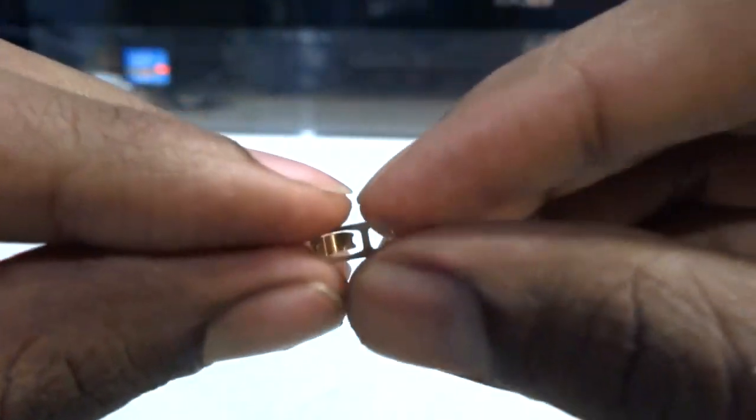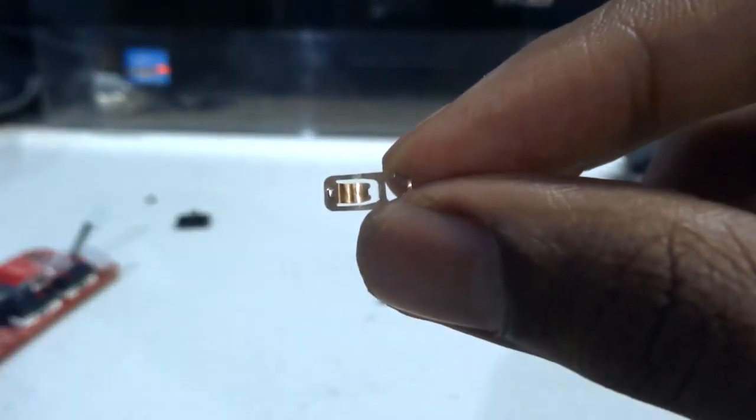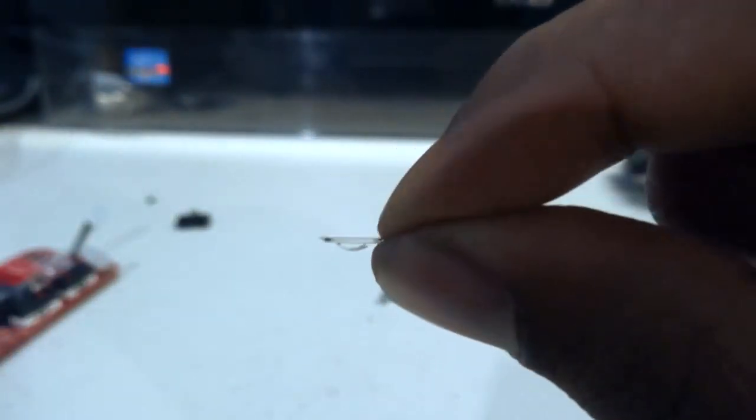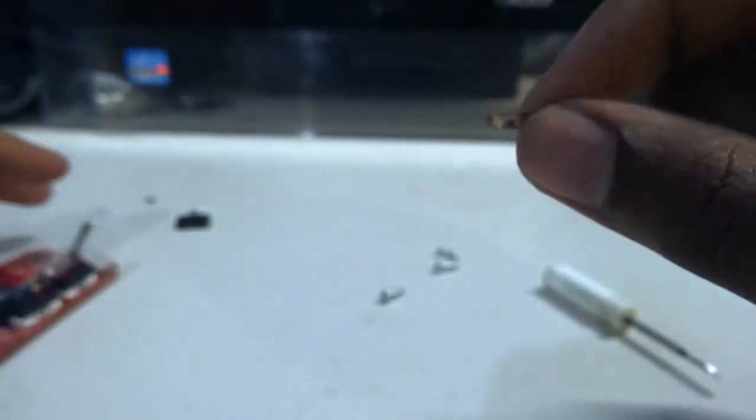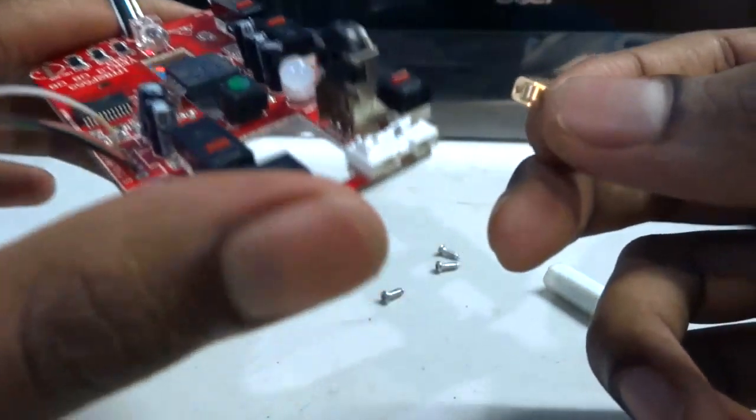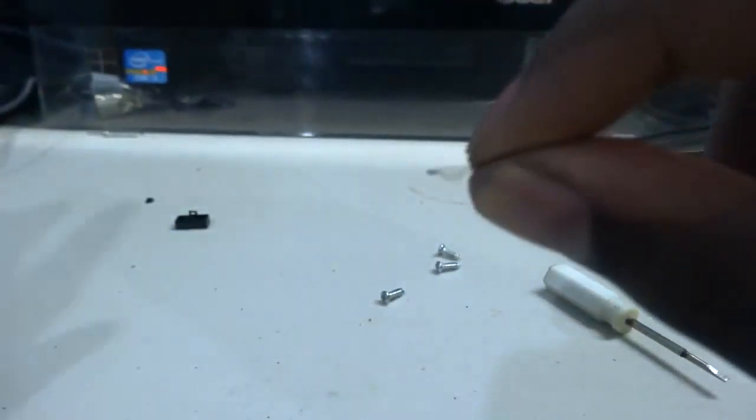Once it comes out, you have this, that's what it looks like. And you want to straighten that curved bit. Now of course, different mice have different mechanisms. Some require you to actually curve it some more, this one requires you to flatten it.